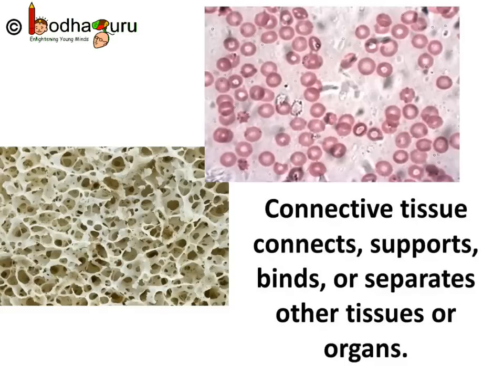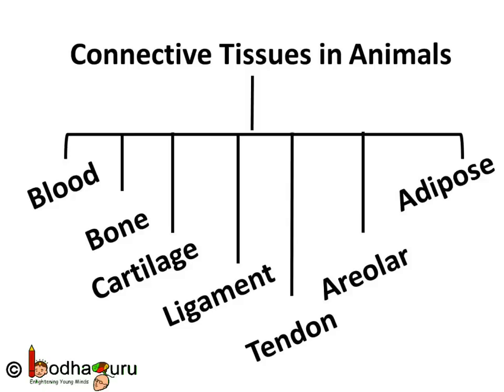So now you know that connective tissue connects, supports, binds, or separates other tissues or organs, and that every type of tissue is specialized for a certain task. The different types of connective tissues are blood, bones, cartilage, ligament, tendon, areolar tissue, and adipose tissue.